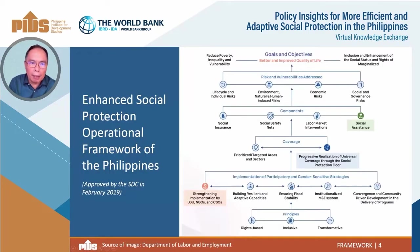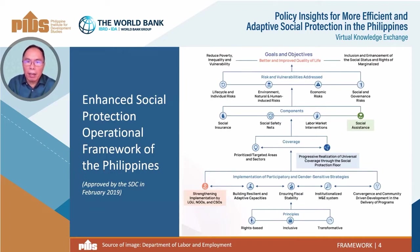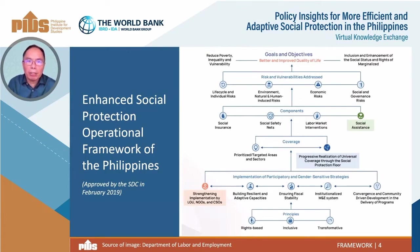This is the current official social protection framework updated by the SDC in 2019. It starts from the basic principles at the bottom to the objectives on the top. In the middle are strategies, coverage, components, and the type of risks. In the following slides, I will describe the developments in the analysis and elements of the social protection floor, namely social health insurance, income security for children, income security for the elderly, and income security for the working age population.